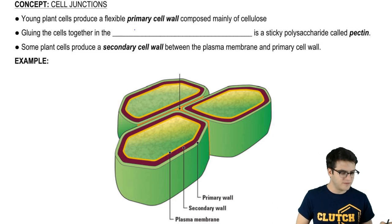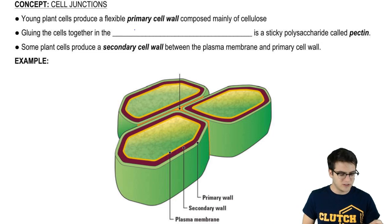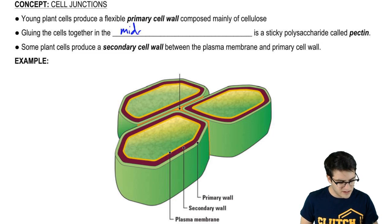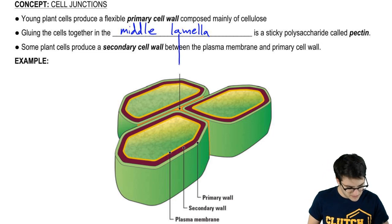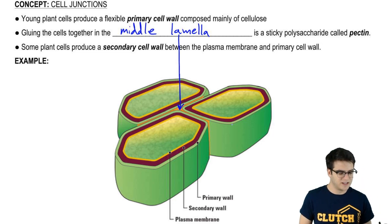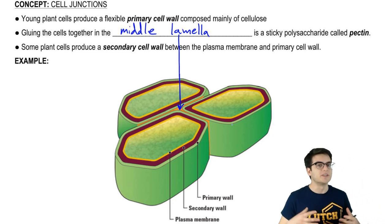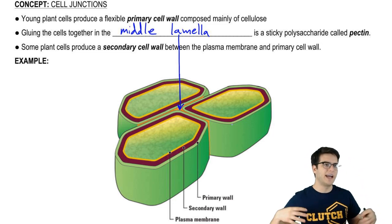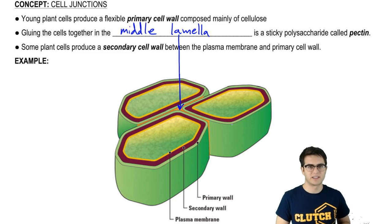Now the cell walls of various plant cells are glued together by a sticky polysaccharide called pectin, and they're glued together in an area called the middle lamella. And we can see this middle lamella here, this sort of orange goop between the cells. And remember, a lot of that goop is going to be pectin, which kind of acts like a glue binding the cells together.